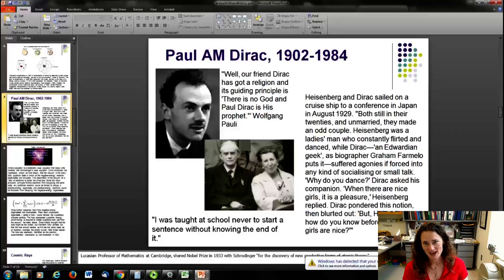Heisenberg and Dirac, actually, were on a cruise ship to a conference in Japan in August of 1929, and Heisenberg was quite the ladies' man. So, they were both still in their twenties, and they were unmarried, and they sort of made an odd couple because Heisenberg was a ladies' man, and he constantly flirted and danced. And Dirac was an Edwardian geek, and he really didn't like to socialize and make small talk. It was quite painful for him. So, do you dance? Why do you dance? Dirac asked his companion, and Heisenberg replied, well, when there's nice girls, it's a pleasure. And Dirac really thought that over, and then he said, but Heisenberg, how do you know beforehand that the girls are nice? So that's the story. Who knows if it's true, but it's pretty funny.